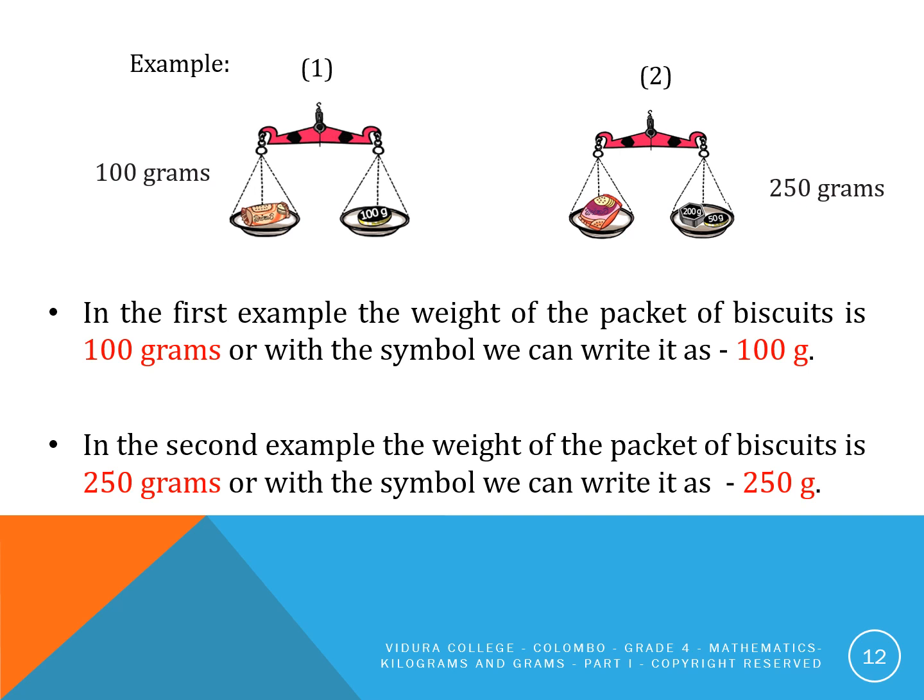In the first example, the weight of the packet of biscuits is 100 grams, or with the symbol we can write it as 100 g. In the second example, the weight of the packet of biscuits is 250 grams, or with the symbol we can write it as 250 g.